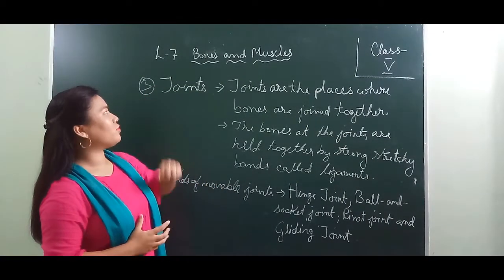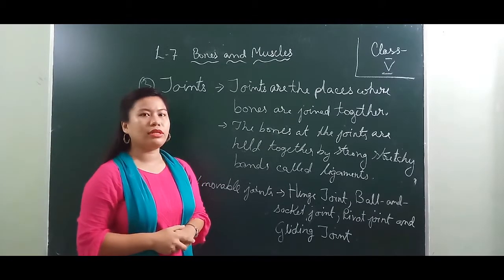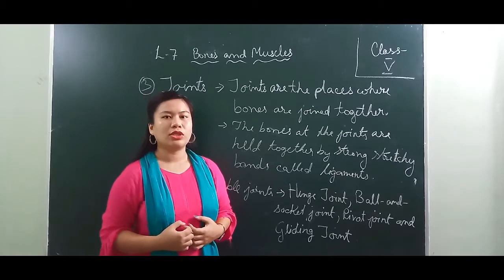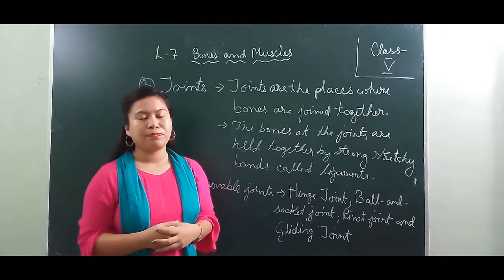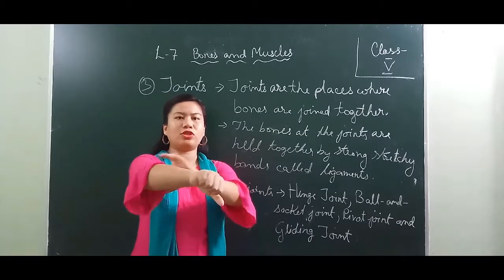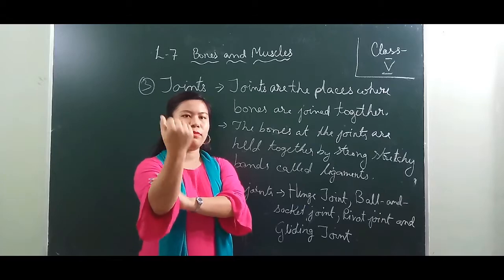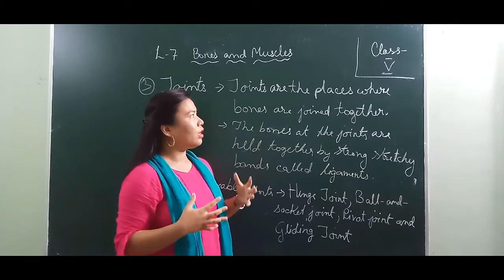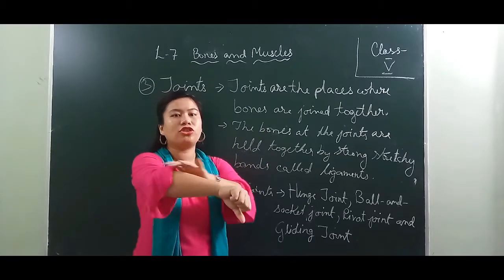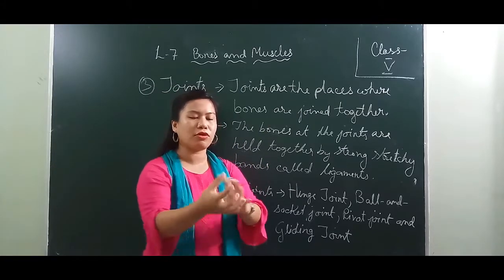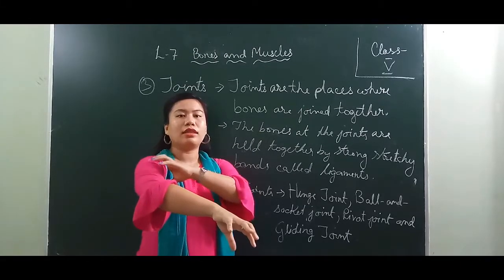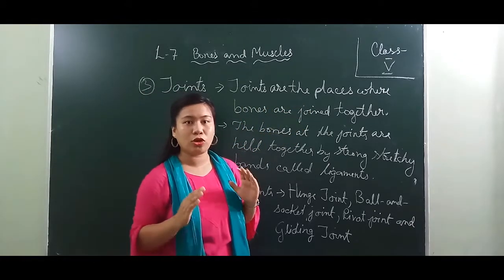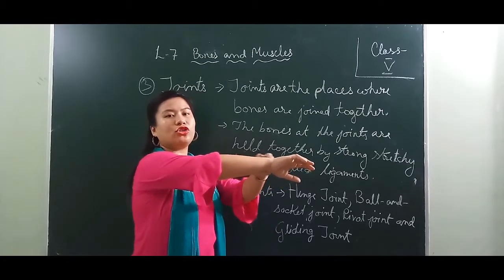Our next topic is joints. We've already learned about the different parts of the skeleton. You can bend your arm — this is possible because of the way bones are joined to each other. Joints are the places where bones are joined together. The bones and joints are held together by strong, stretchy bands called ligaments.